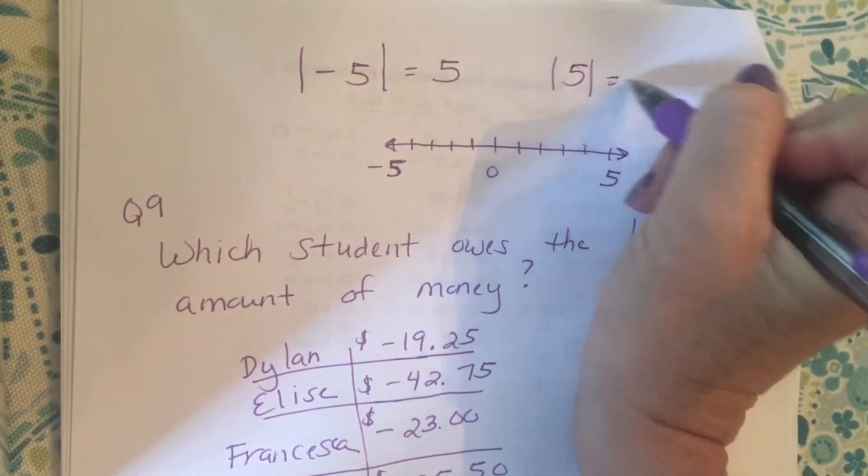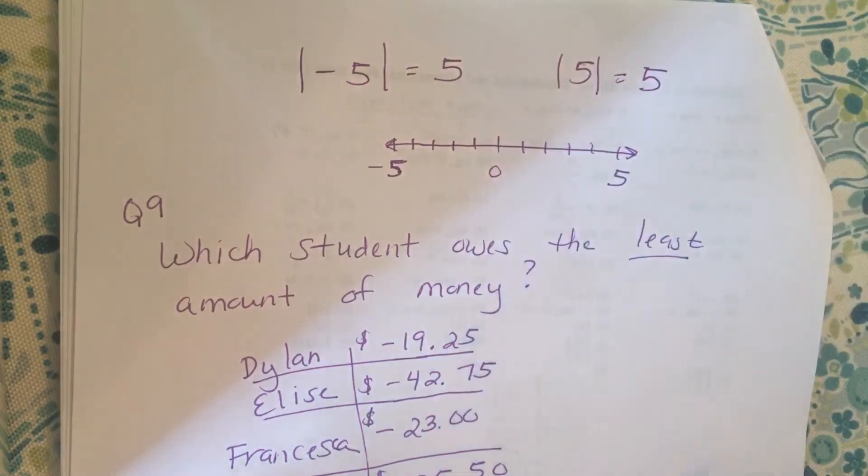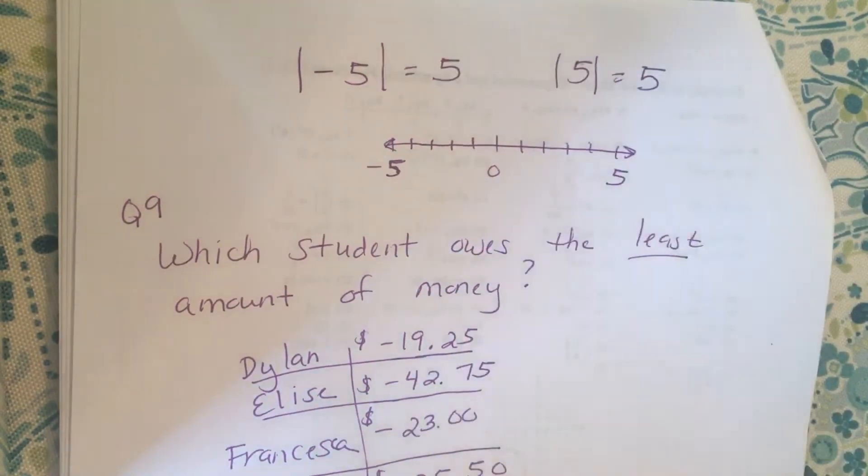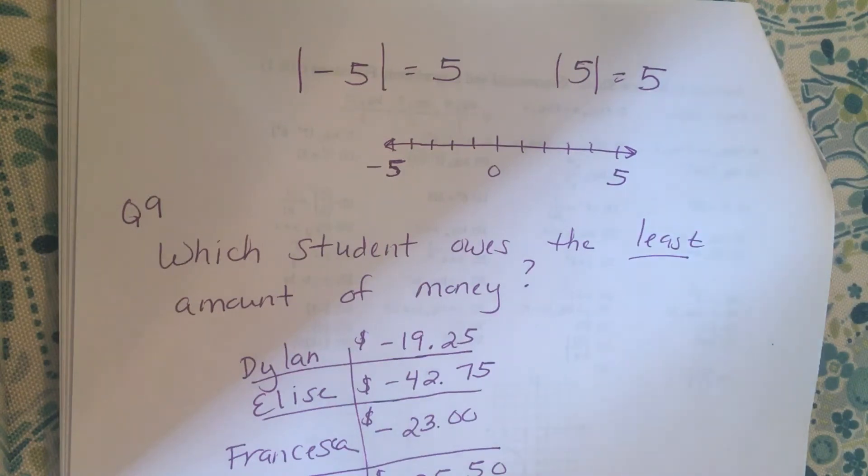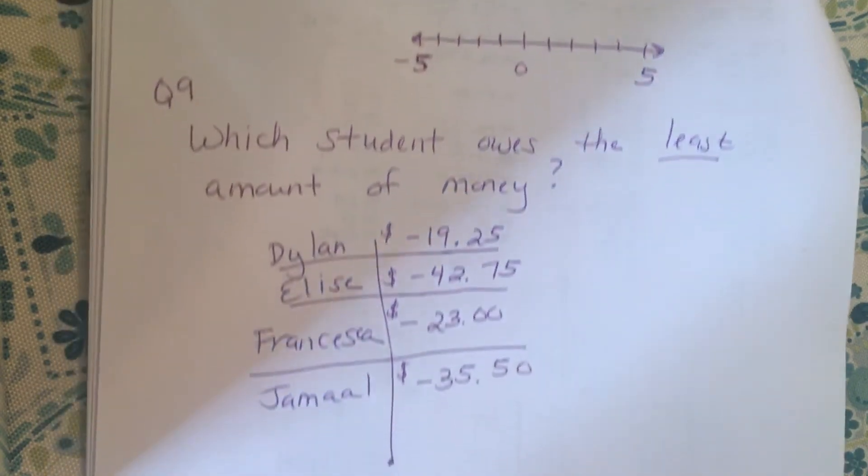The absolute value of positive five is also five because it is also five steps away from zero. So absolute value isn't positive or negative; it's simply the distance from zero. I hope that helps for that one.